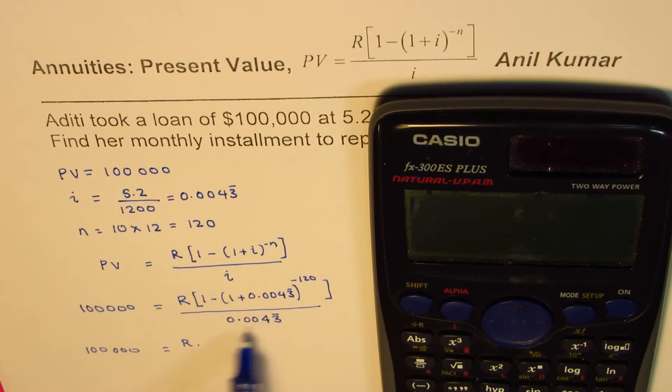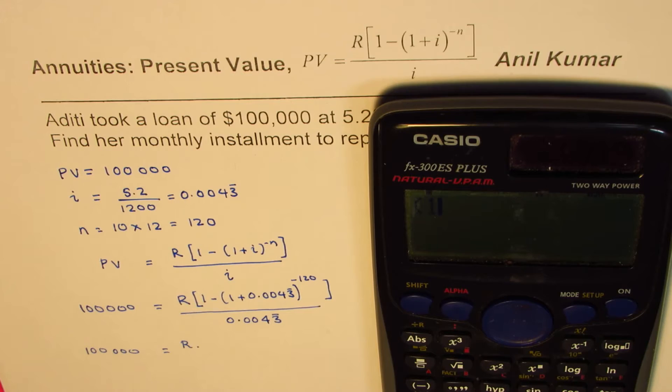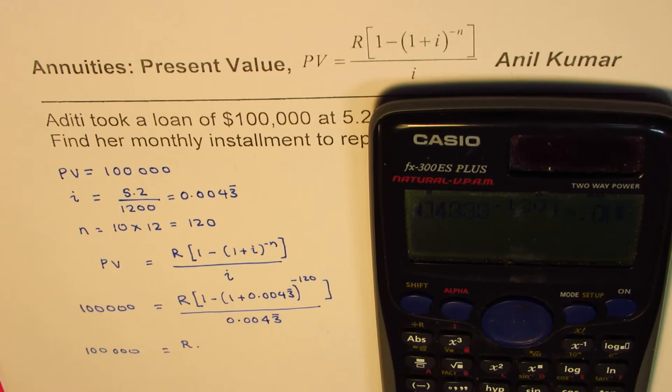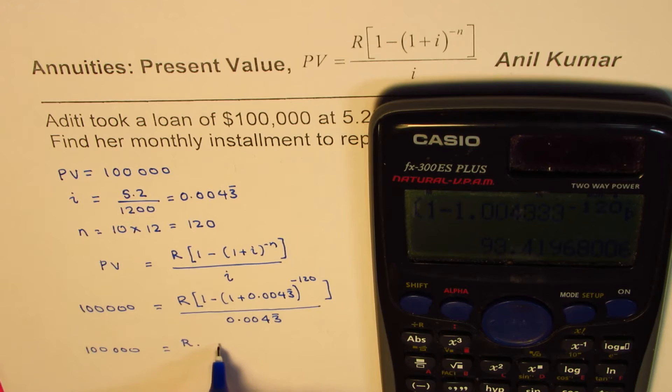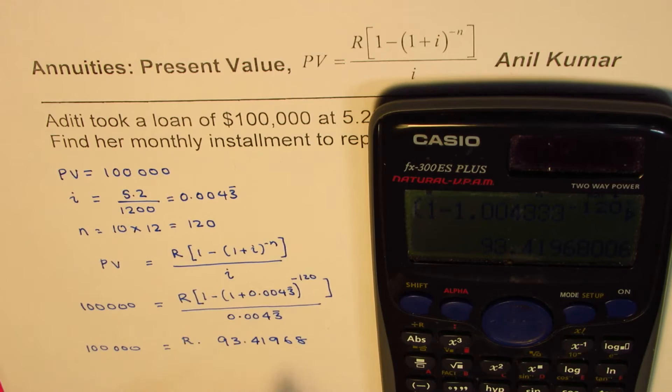Within brackets, let's put two brackets since we have to divide by this number also. One minus [1.00433 to the power of -120], bracket close, and then divide by 0.004333.